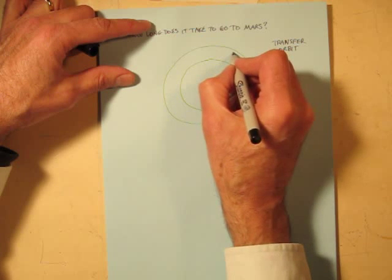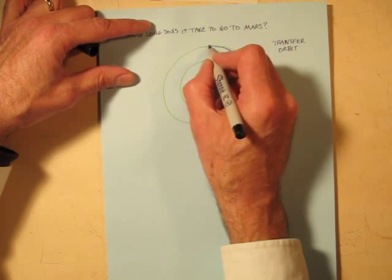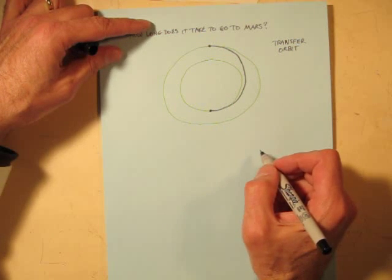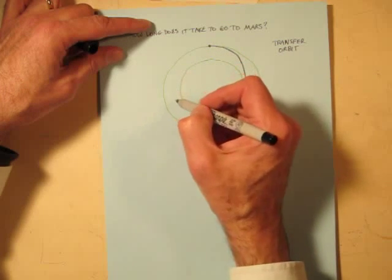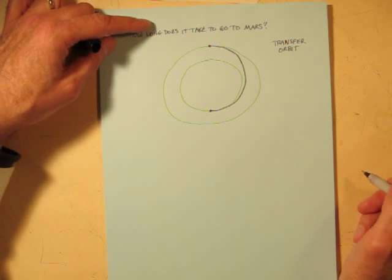We're actually in an elliptical orbit and we want the other end of our ellipse to end up just touching the orbit of Mars. I could draw in the other half of the ellipse here and you would see that it's an entire ellipse. So that's called an elliptical transfer orbit.